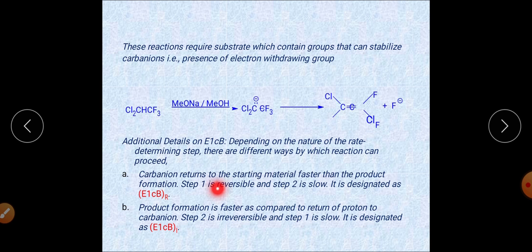When we discuss the mechanism in detail, three different parameters characterize the E1cb reaction. The first parameter is when the carbanion returns to starting material faster than product formation — that is, step one is reversible and step two is slow, the rate-determining step. This type of reaction is called E1cbR.